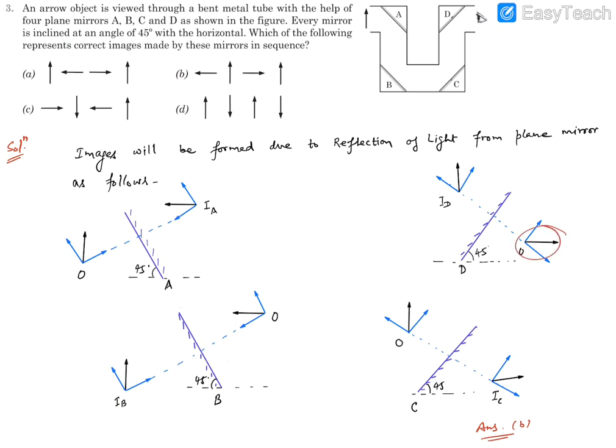And finally this C image is going to be the object for the mirror D. And then you'll find again make the two components parallel to the mirror, perpendicular to the mirror. Invert them, find the resultant and that will be the final image due to D that is drawn over here. So B has all the sequence form of images correctly drawn. Hence B is our right response.